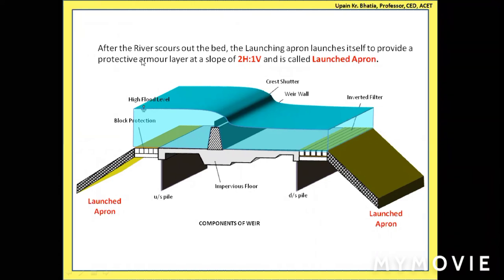After the river scours out the bed, the launching apron launches itself to provide a protective armor layer at a slope of 2 horizontal to 1 vertical, and is then called the launched apron. The slope means that for every 1 unit of vertical scour depth D, the horizontal extent is 2D. We must design the launching apron so that in the event of a flood it launches itself into this shape.